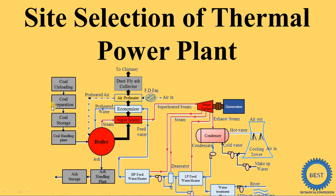Fourth point is ash disposal facilities. From the boiler, ash is produced, and for that we require proper disposal facilities, and for that we also require land. So the next point is the requirement of land. And if land is available, which type of land is available — the nature of land — is also important, because the land is required to absorb static as well as dynamic loads, since turbines rotate at very high speeds. So land must be able to sustain the forces of the turbines.